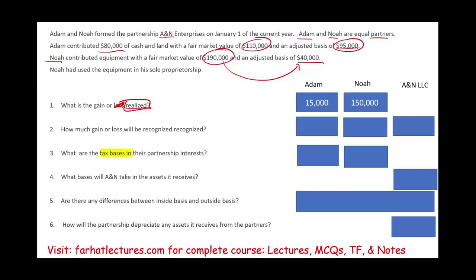The second question: how much of the gain will be recognized as a result of this transaction? What happened here is we contributed our assets to form a partnership. What we need to know is that we ignore the fair market value — we use the adjusted basis of the property contributed. So how much gain is recognized by Adam? Zero. How about Noah? Zero. And on the CPA exam simulation, make sure to enter zero if that is the answer. The partnership itself also has no gain or loss realized.